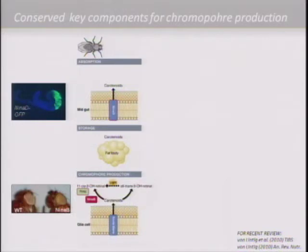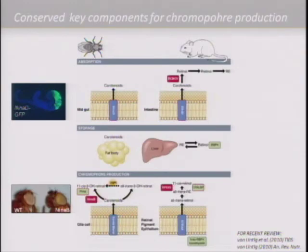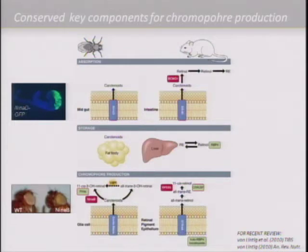In the Nina B mutant, you can nicely see when this process fails — these flies accumulate carotenoids in their eyes and have yellow eyes. This analysis helped very much to identify homologous proteins first in mice and then in humans. It turned out that a lot of these components are quite well conserved between flies and mammals, though they have been adapted to the special requirements of vertebrate vitamin A metabolism.